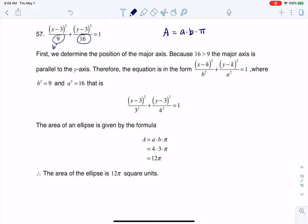You know that b squared here is 9, and a squared is 16, and I know that a squared is 16 because it's the larger number. So that tells me b is 3, a is 4.